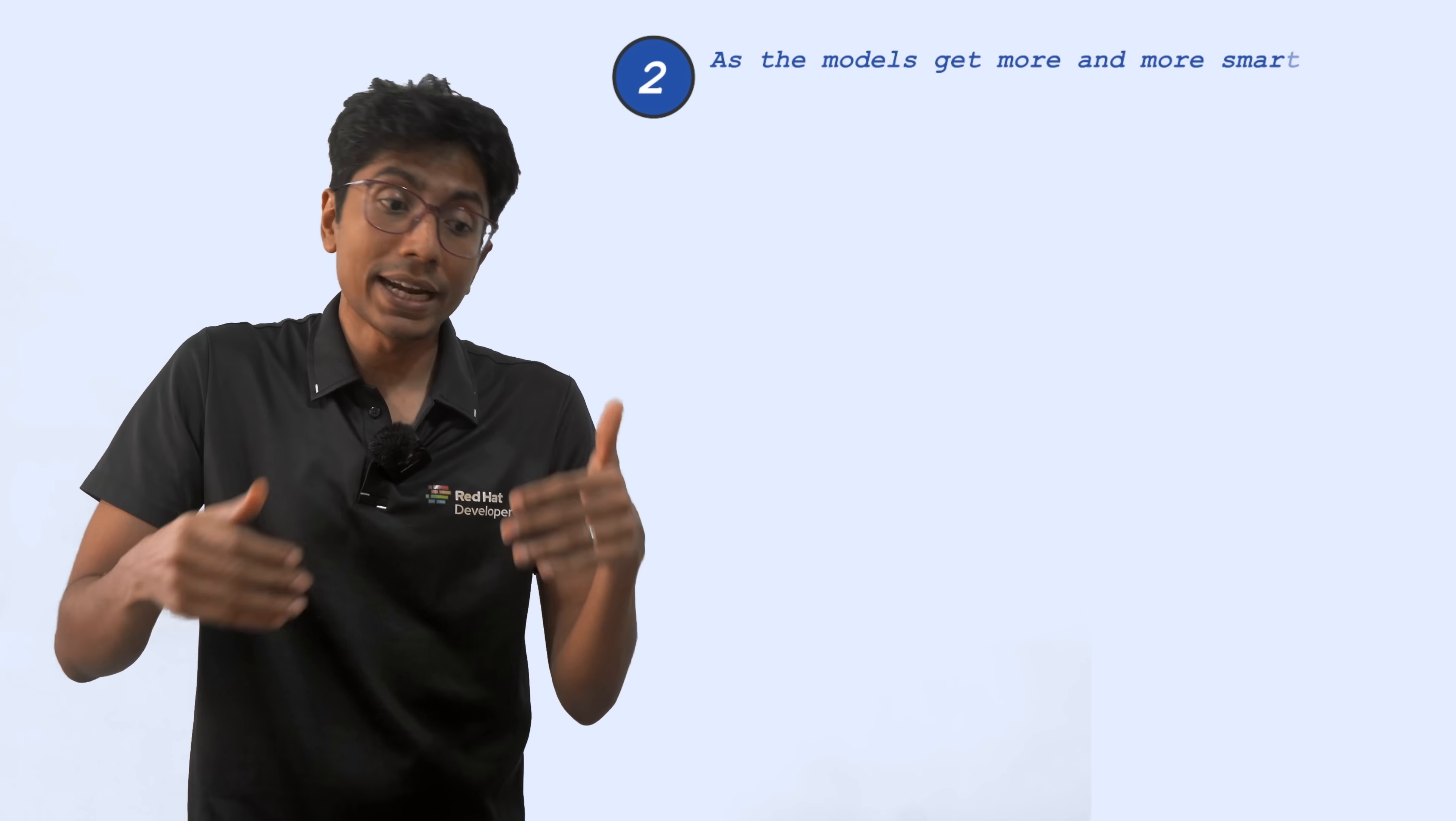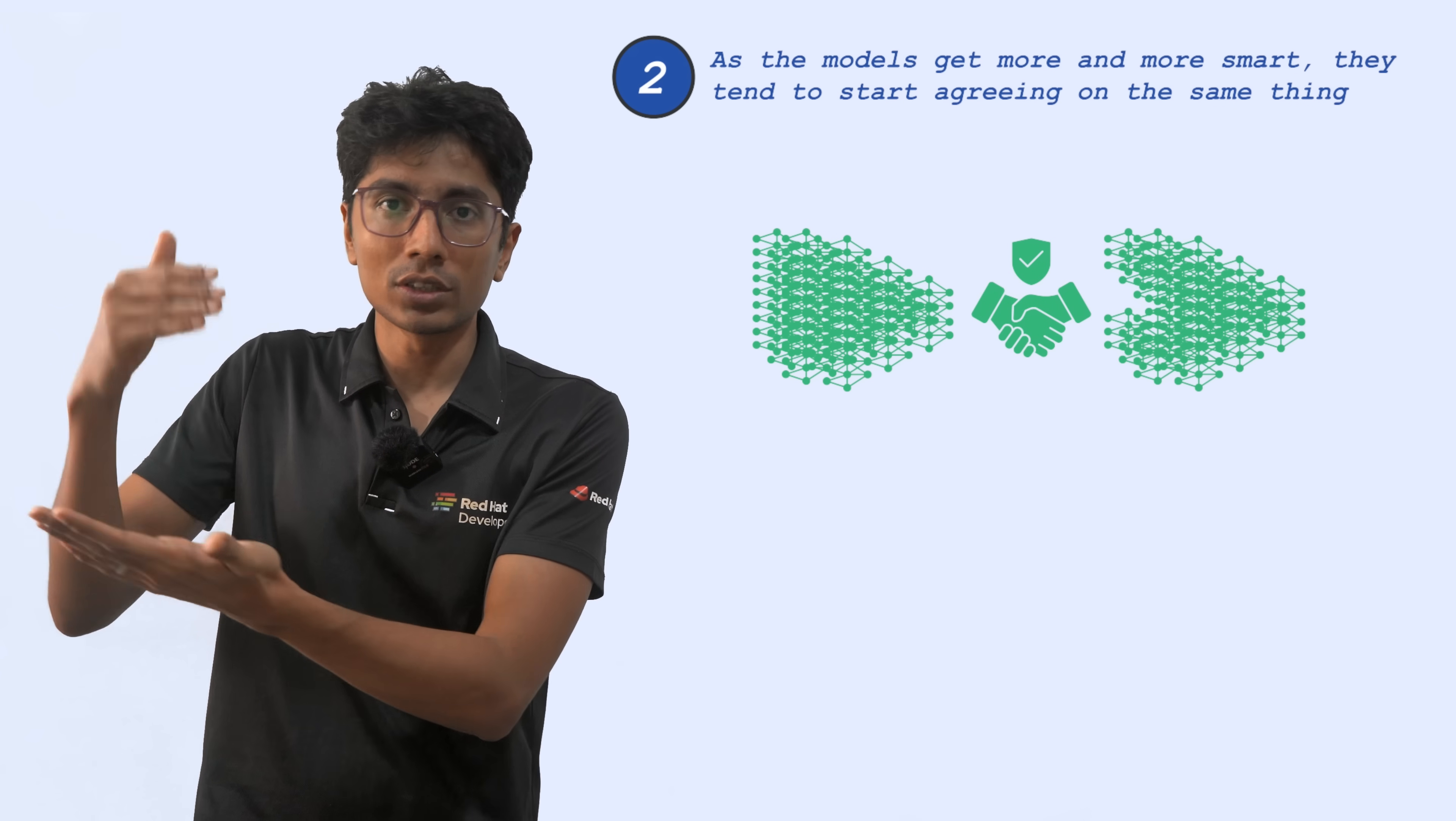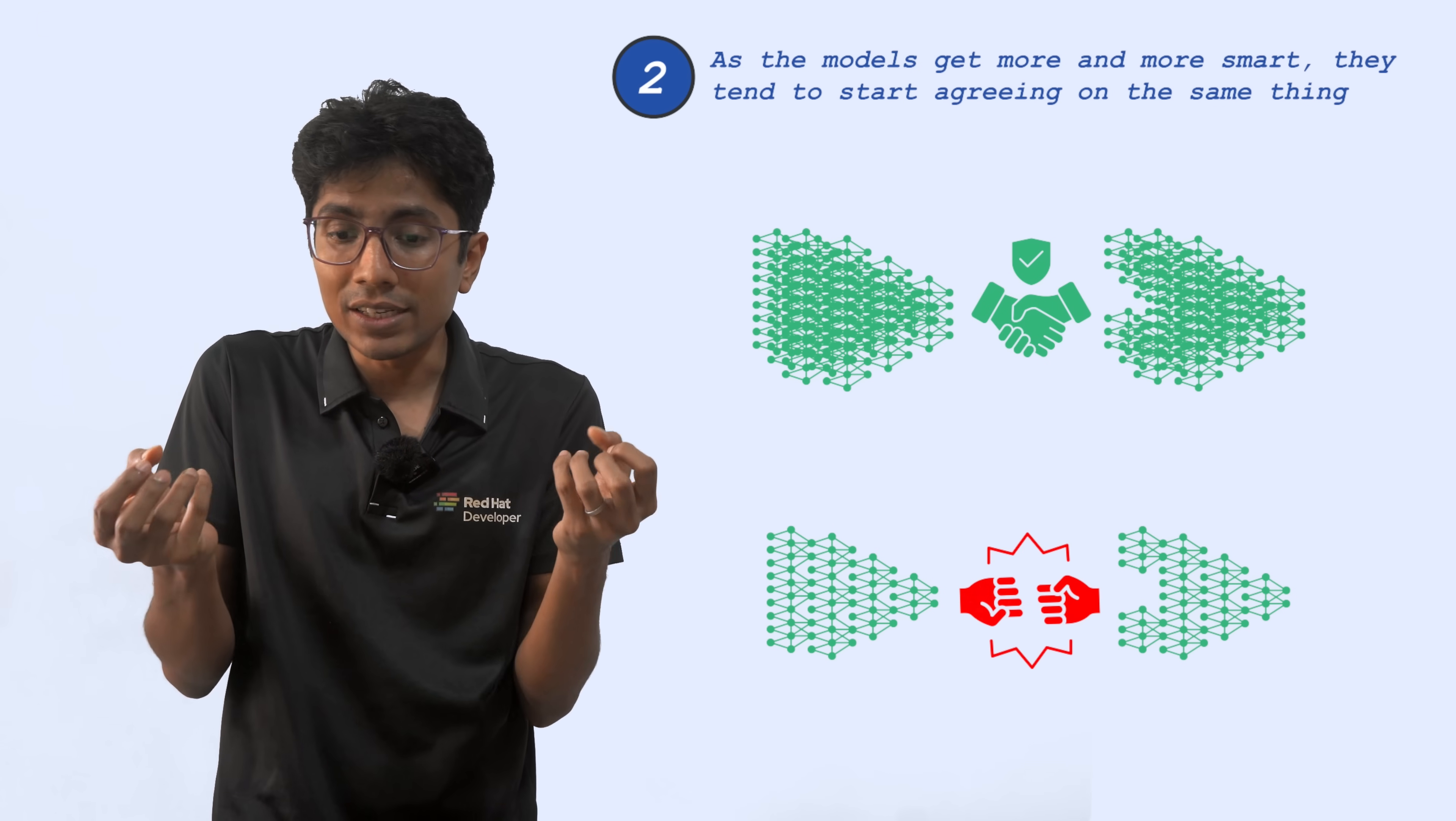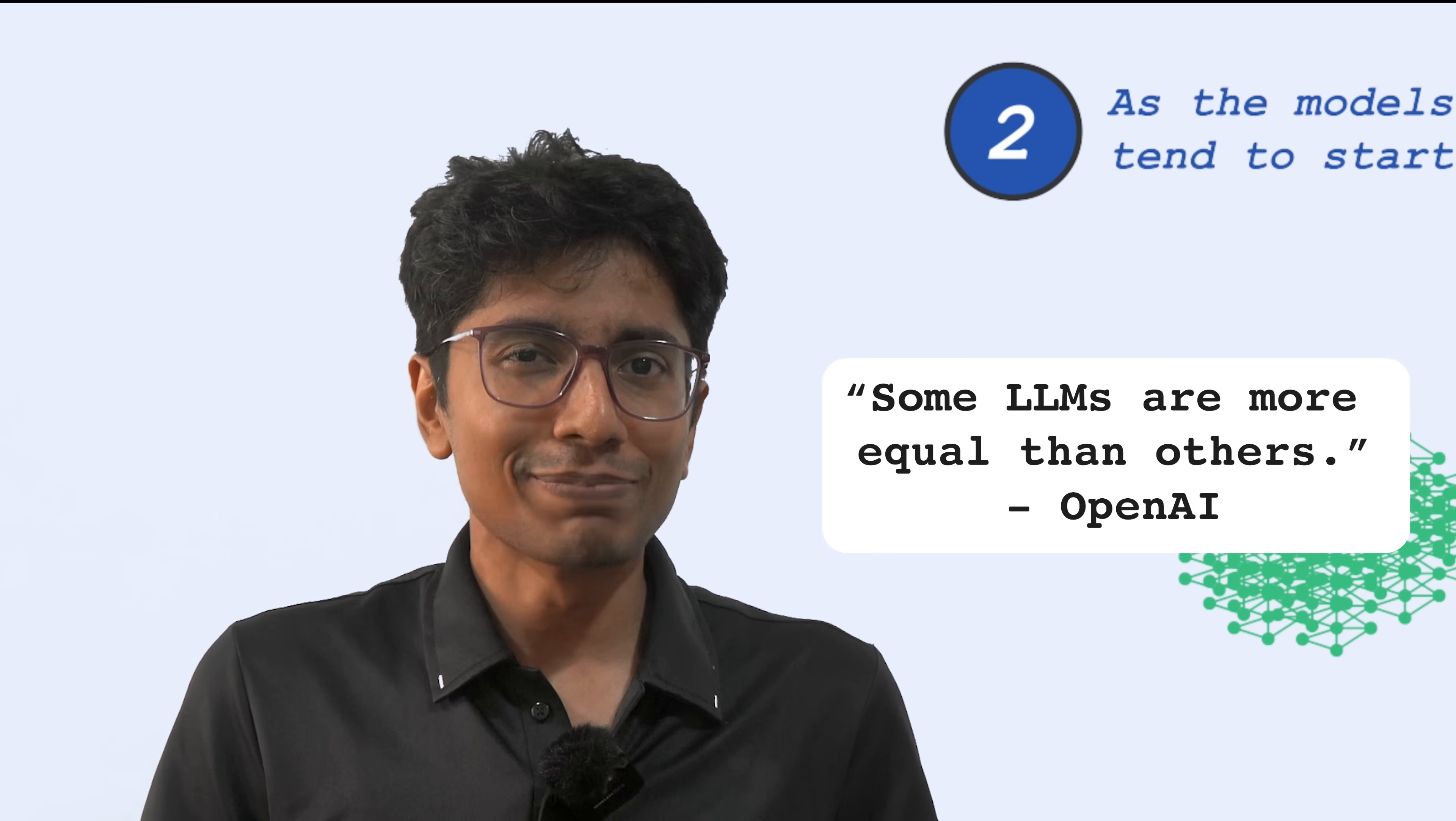The second reason for this could be as the models get larger and larger, they get smarter and smarter. So eventually they all agree on the same thing. Very smart people all agree on the same reality. The smaller models don't agree with each other, because they haven't seen enough of the reality space yet. This looks like a classist way of describing things, but we'll leave it at that.